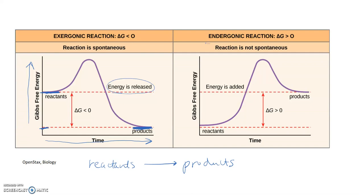If we look at an endergonic reaction, it's the exact opposite. The amount of potential energy in the reactants versus the products shows that there's more energy in the bonds of the products — that energy has to come from somewhere. Therefore, for this reaction to go forward, there's going to have to be an input of energy. An exergonic reaction releases energy for the cell, and an endergonic reaction requires an input of energy. These two types of reactions can be coupled together so an exergonic reaction can drive an endergonic reaction in the cell.